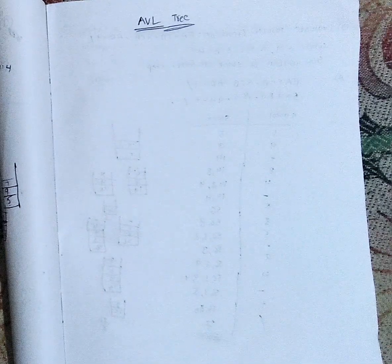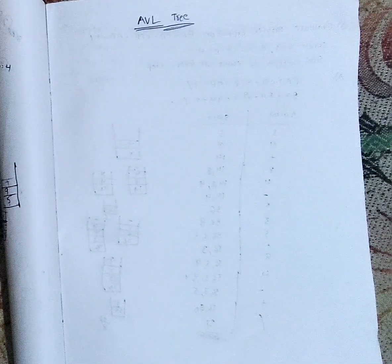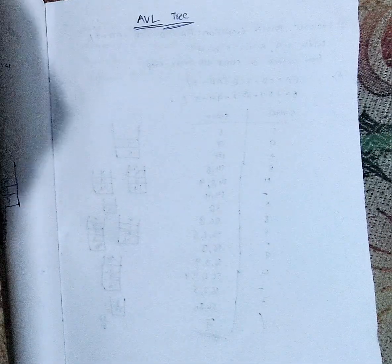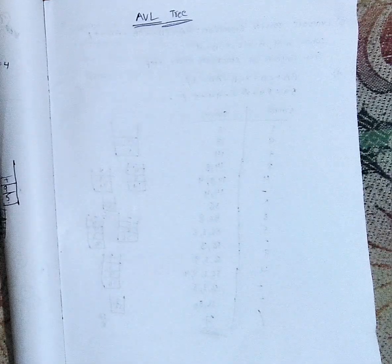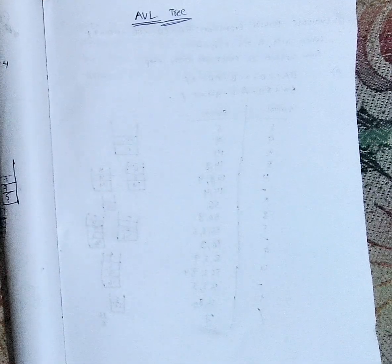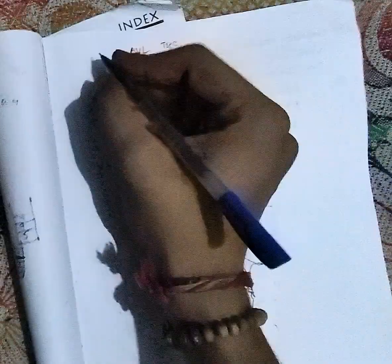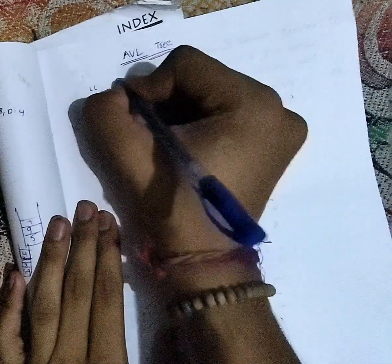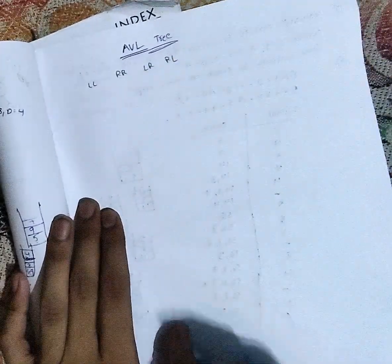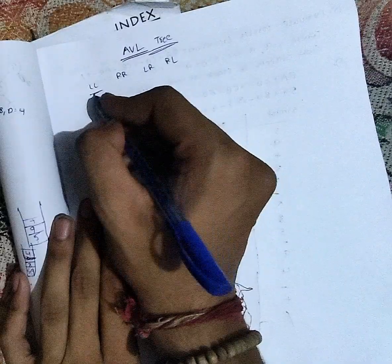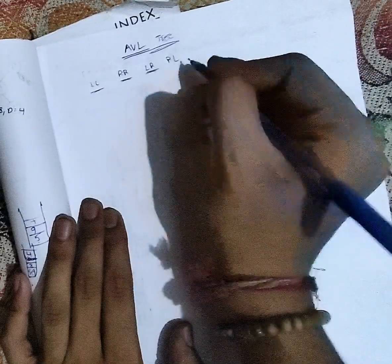In this video we are going to discuss the topic of AVL trees. We will learn the types of rotations and how to balance the tree after insertion of each element. There are four types of rotations: LL rotation, RR rotation, LR rotation, and RL rotation — that is left-left, right-right, left-right, and right-left.